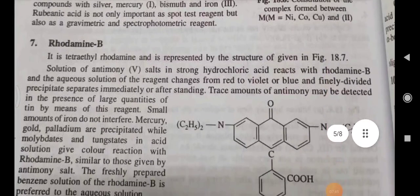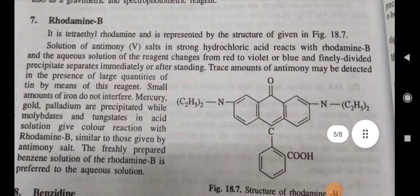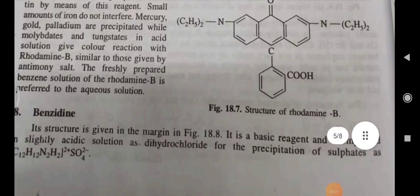Rhodamine B — it is tetraethyl rhodamine, represented by the given structure. Solutions of antimony salts in strong hydrochloric acid form red to violet finely divided precipitates immediately or after standing. Trace amounts of antimony may be detected in the presence of large quantities of tin by means of this reagent. Small amounts of iron do not interfere. Mercury, gold, and palladium are precipitated, while molybdates and tungstates in acid solution give a color reaction with Rhodamine B similar to those given by antimony salts. The freshly prepared benzene solution is preferred to the aqueous solution.